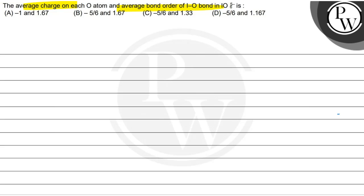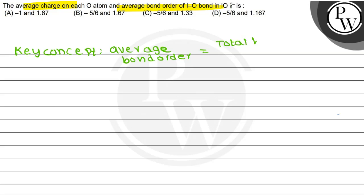We have to find out the correct one. The key concept here is the formula to find the average bond order. Average bond order is equal to total number of bonds divided by total atoms surrounding.